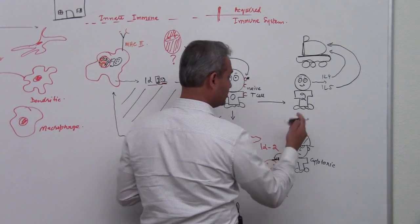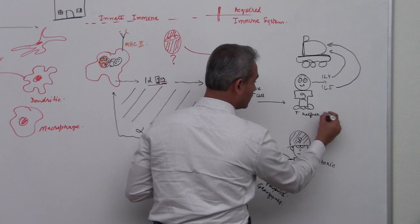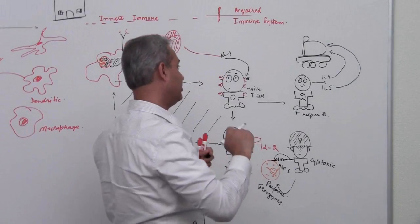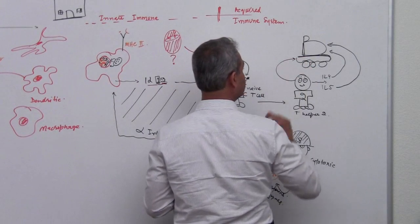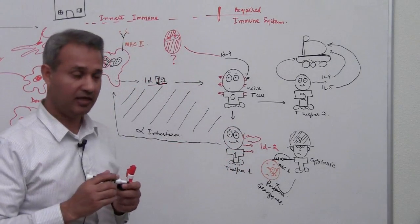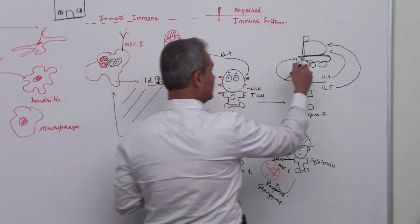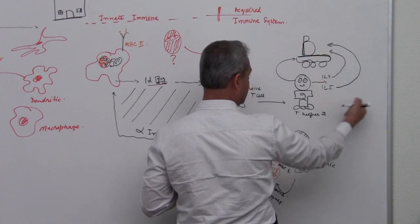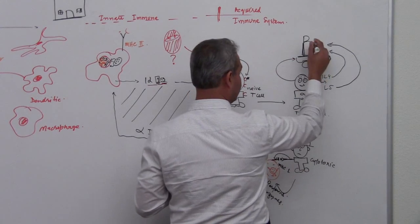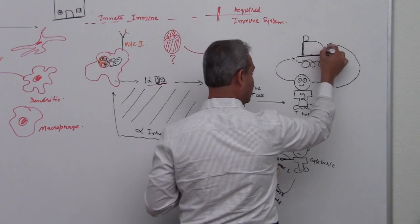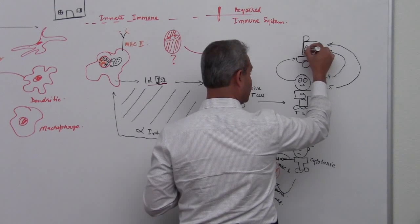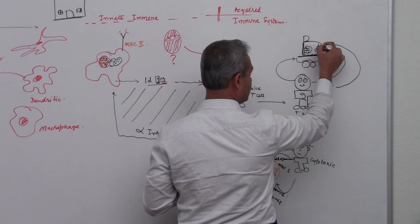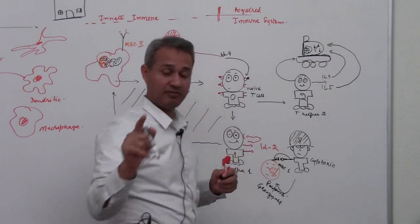The T helper 2 acts on the B cell. It releases IL-4 and 5 plus it has multiple ways of connecting with the B cell. The end result is this B cell, in the beginning it is a B cell like this. As a result of IL-4 and activation, it would become an active B cell which is called a plasma cell. It would develop a big tummy in which it would have a lot of antibodies developed. Antibodies are proteins which are produced by the B cell. And that is why you should remember this.